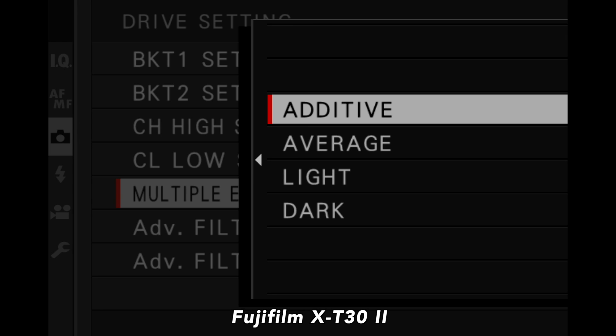Things like additive, average, dark or bright light. What do all of those things mean when you are creating multiple exposure photos? That's what we're going to look at in this video, and it's going to be generic to pretty much every single camera brand that offers this in-camera multiple exposure capability.